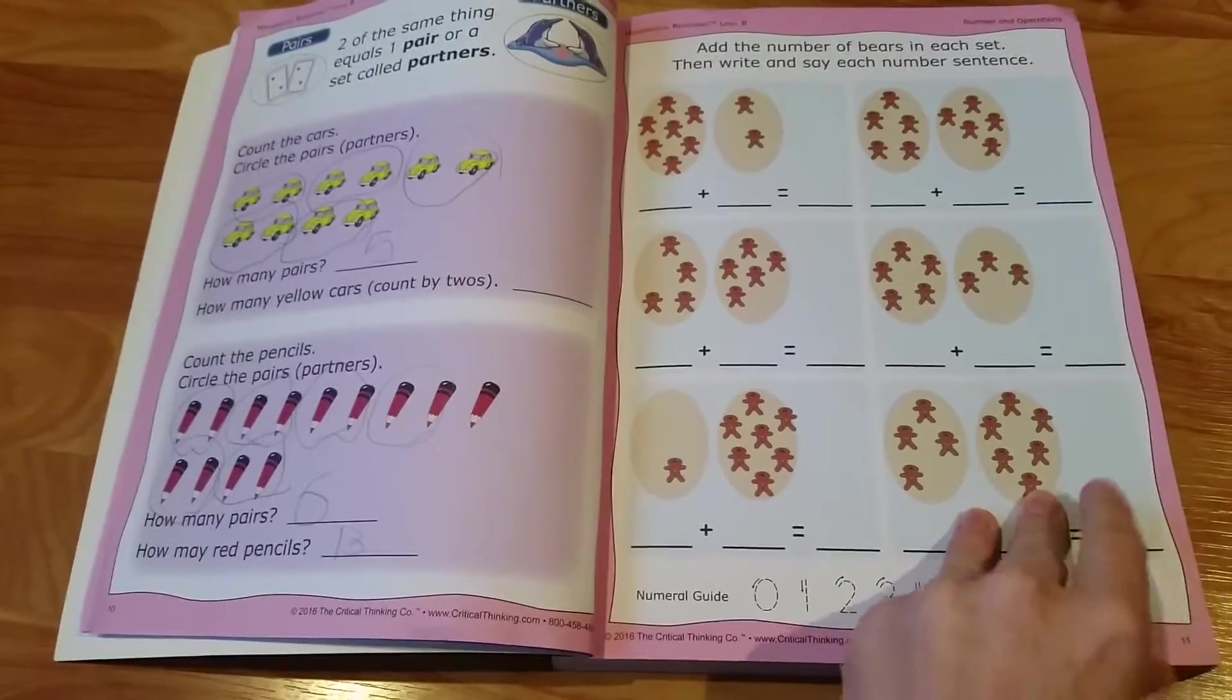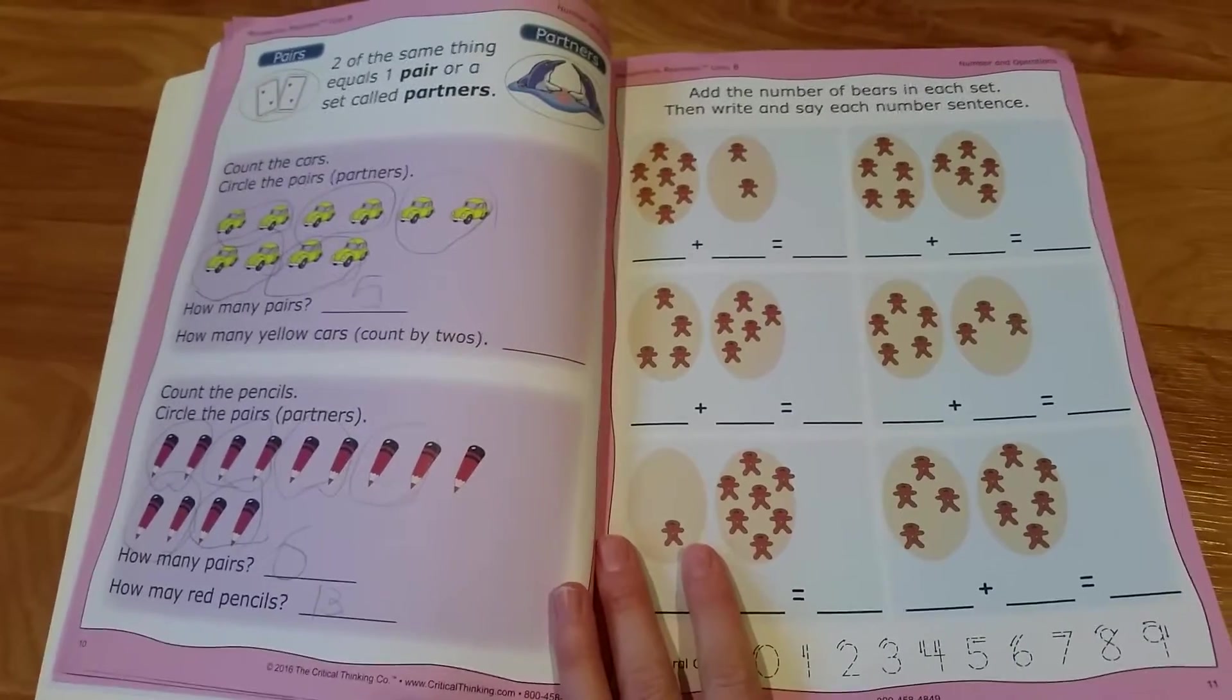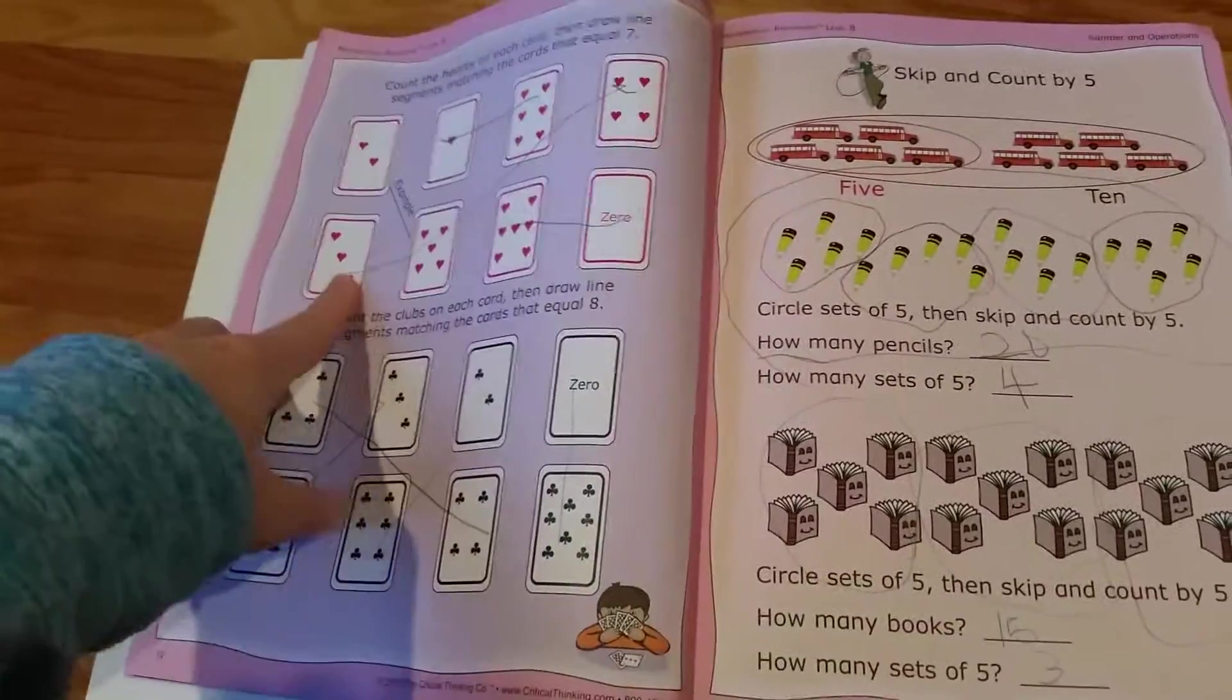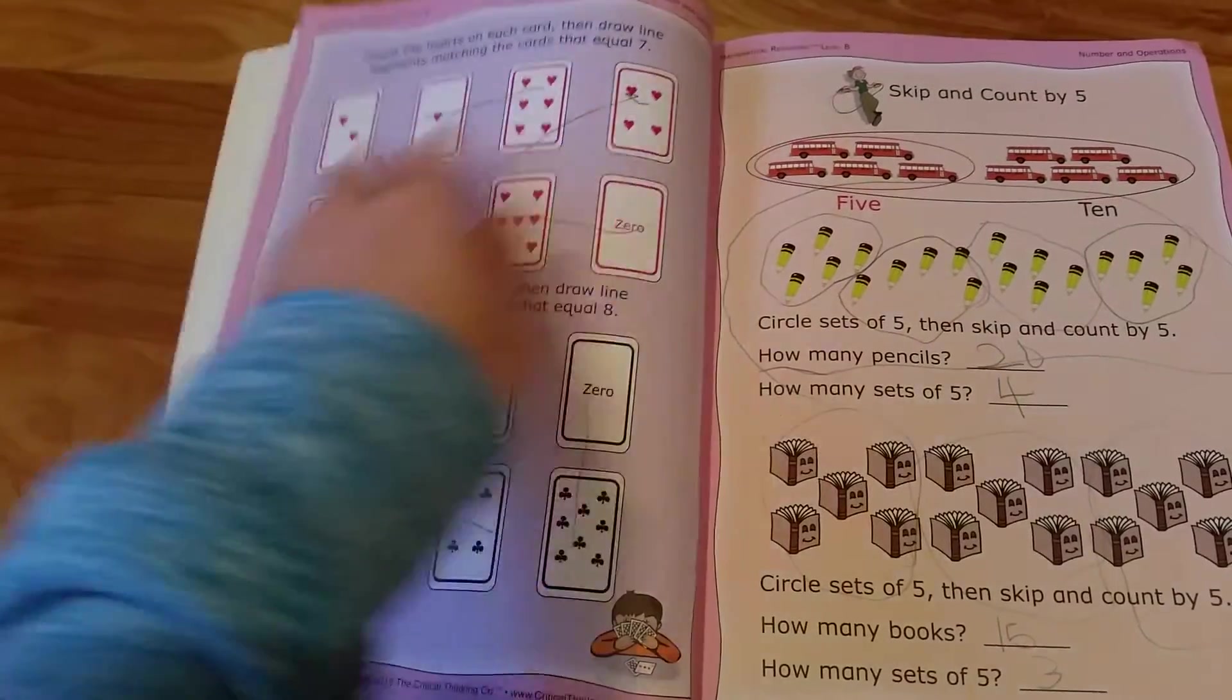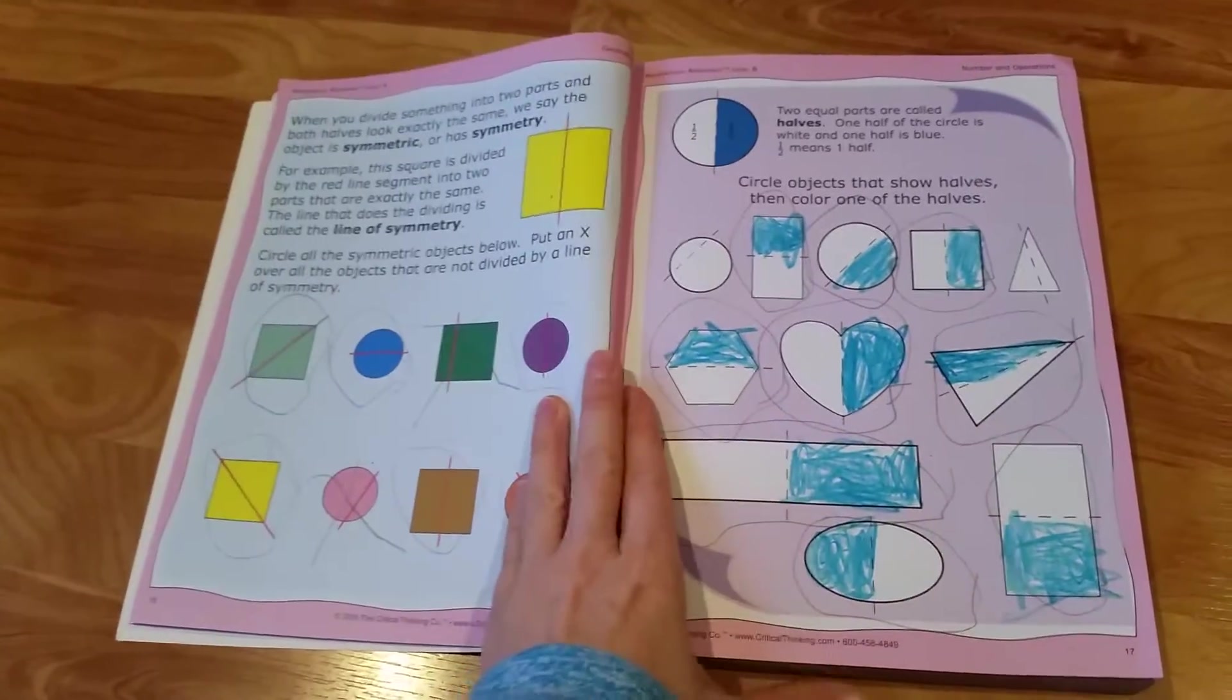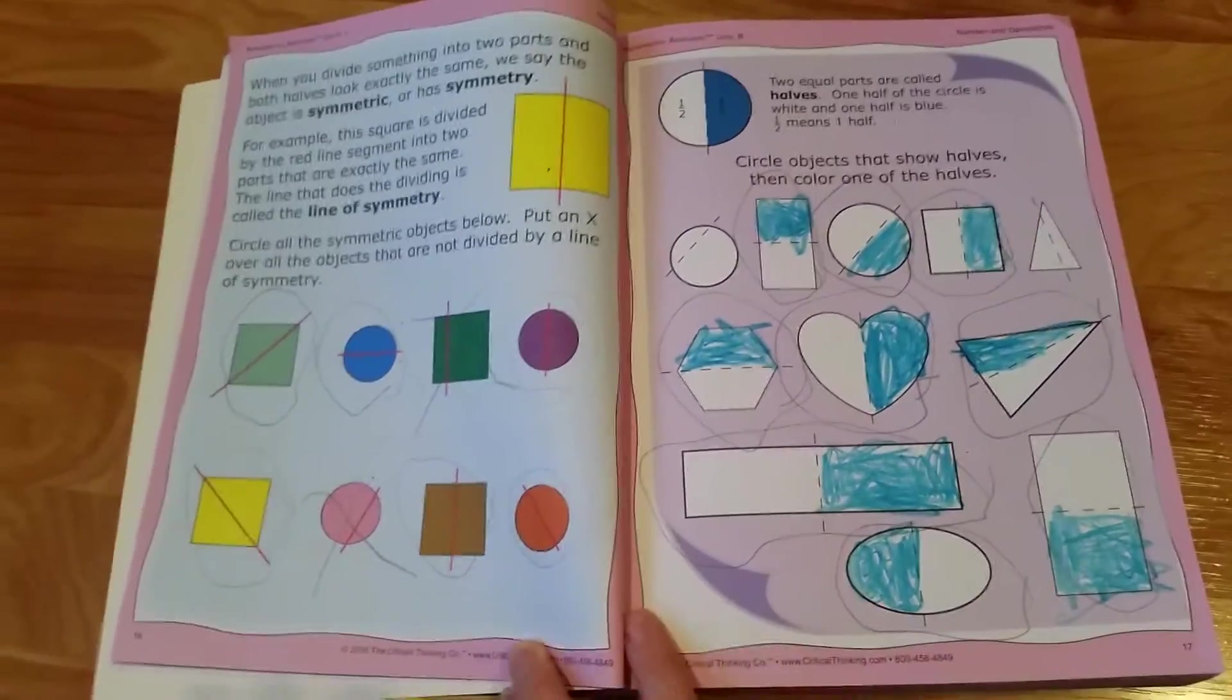There are activities on pairs: how many pairs are there, how many is that all together? This is getting them starting to think about groups and kind of a precursor to multiplication. There's a match-up activity where the hearts on the cards add up to seven, more groups, and then coins and adding.